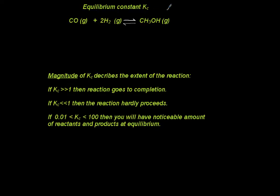The equilibrium constant is a ratio of products over reactants raised to their respective coefficients, and this is a homogeneous reaction, meaning that all reactants and products are in the same phase — in this case, gaseous. If I want to write the equilibrium constant K subscript C, the subscript C means we are doing it in terms of concentration. You could have subscript P for partial pressures, or subscript A for weak acid dissociation.